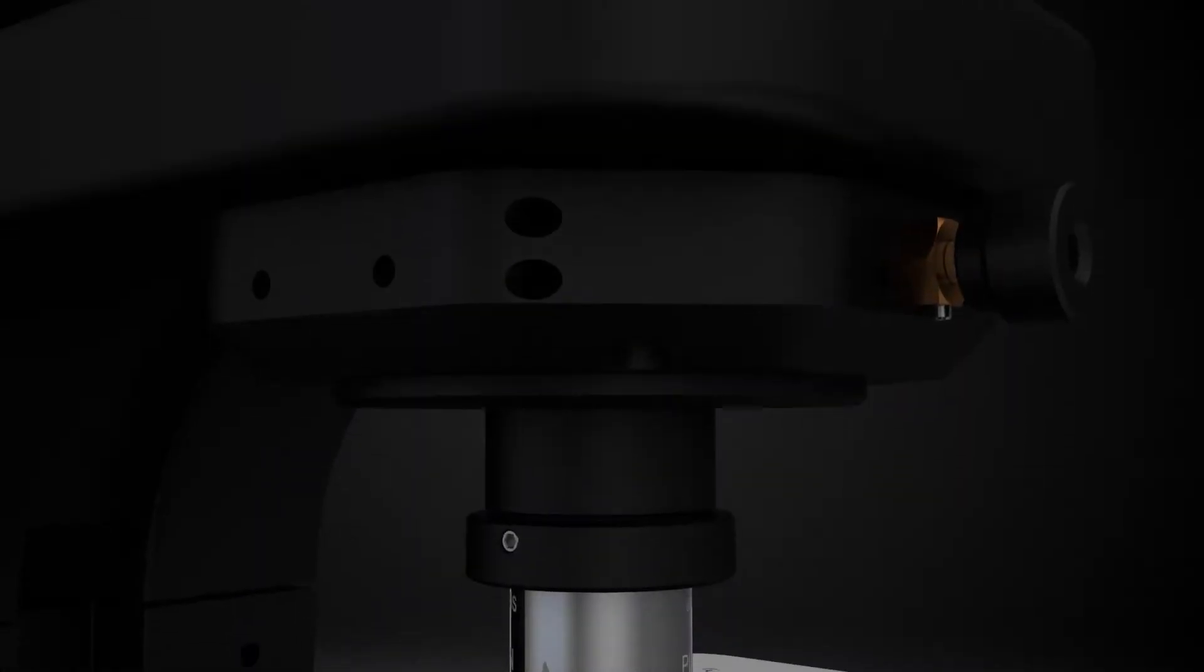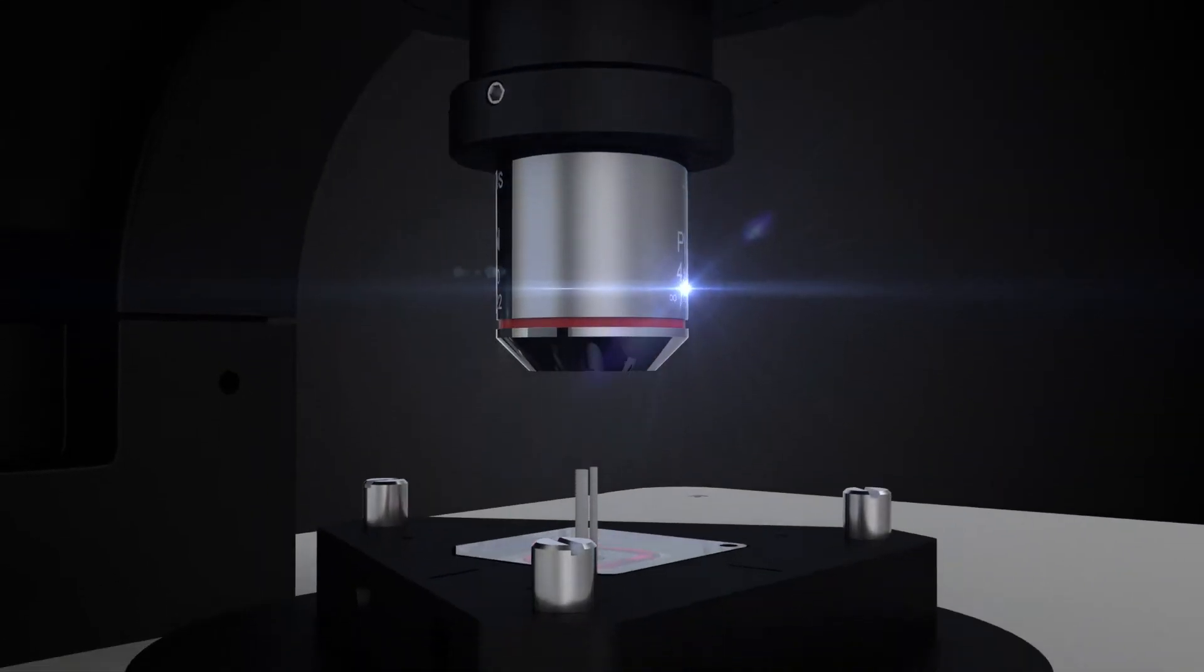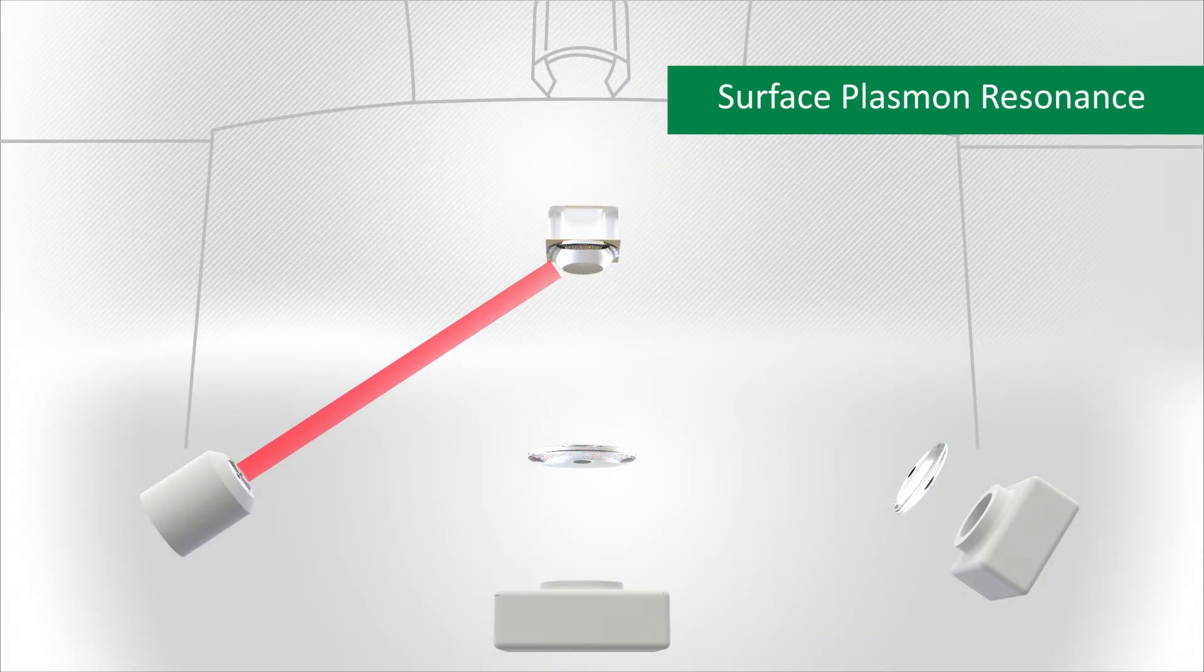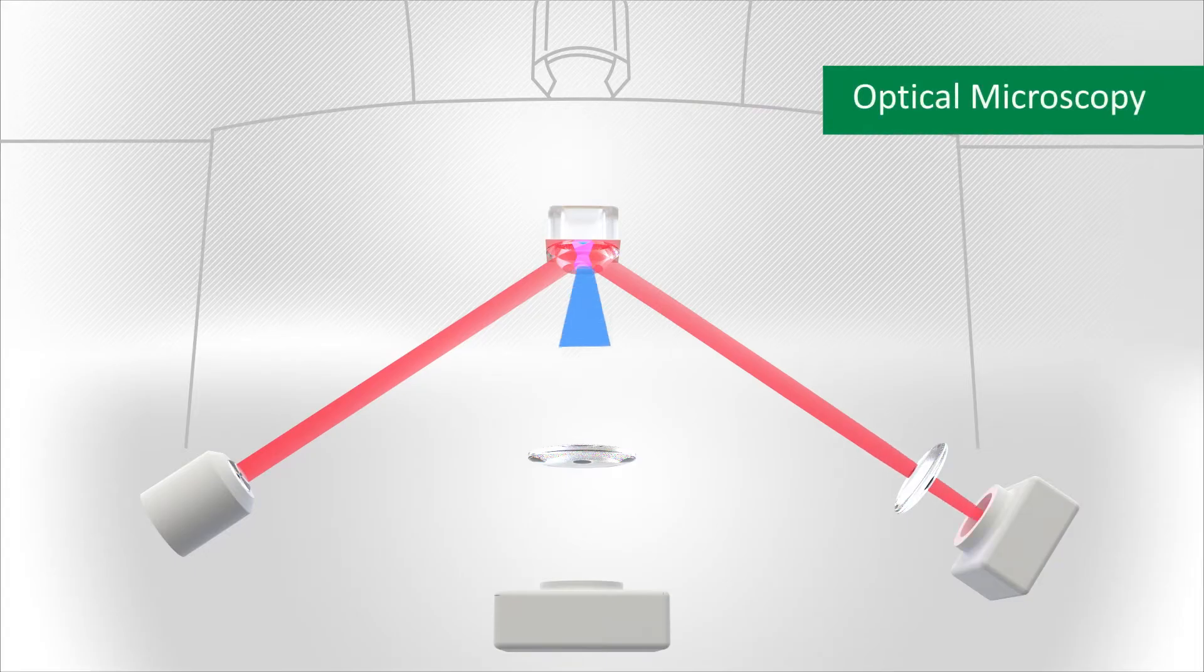Biosensing Instrument opens a new frontier in the research of label-free molecular interactions by introducing SPRM200, the world's first commercially available instrument that combines surface plasmon resonance technology with optical microscopy, known as SPR microscopy.